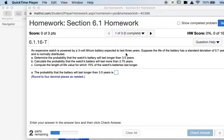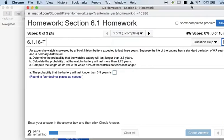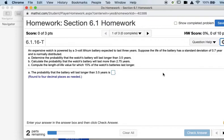We're going to do this homework problem as an example. It says an expensive watch is powered by a 3-volt lithium battery expected to last 3 years. Suppose the life of the battery has a standard deviation of 0.7 year and is normally distributed.